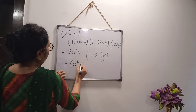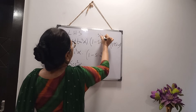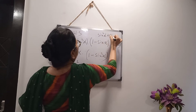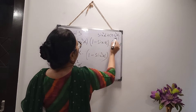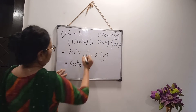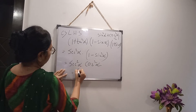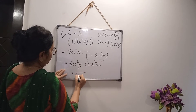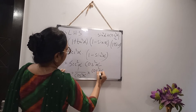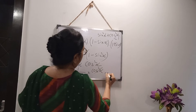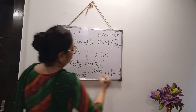Now apply the trigonometric formula: sin²α + cos²α = 1, so 1 - sin²α = cos²α. So we have sec²α × cos²α. Since sec = 1/cos, sec²α and cos²α cancel out, giving 1. We are getting the right hand side. Proved.